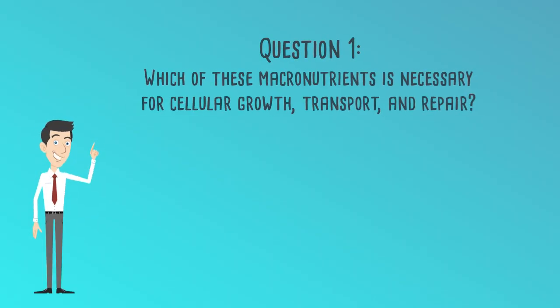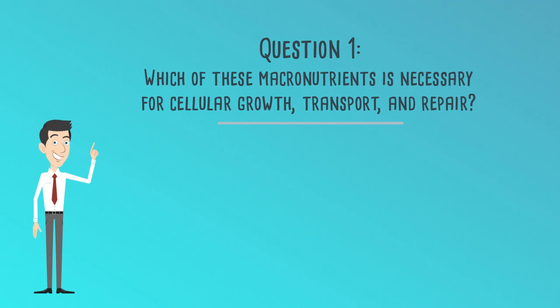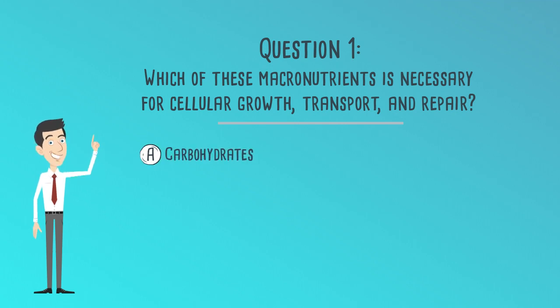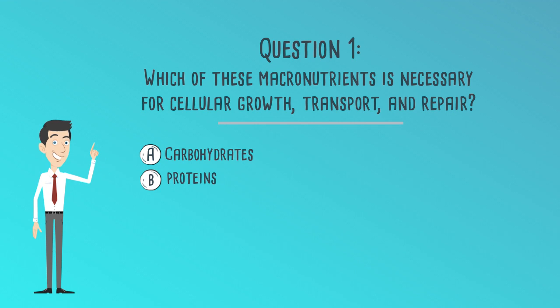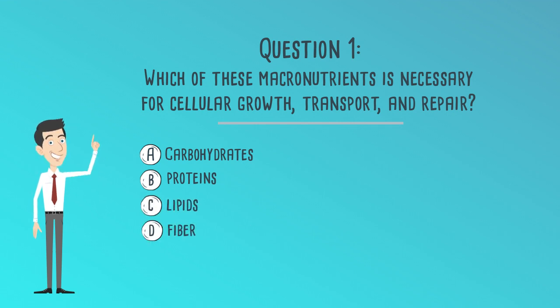Question 1. Which of these macronutrients is necessary for cellular growth, transport, and repair? A. Carbohydrates. B. Proteins. C. Lipids. D. Fiber.